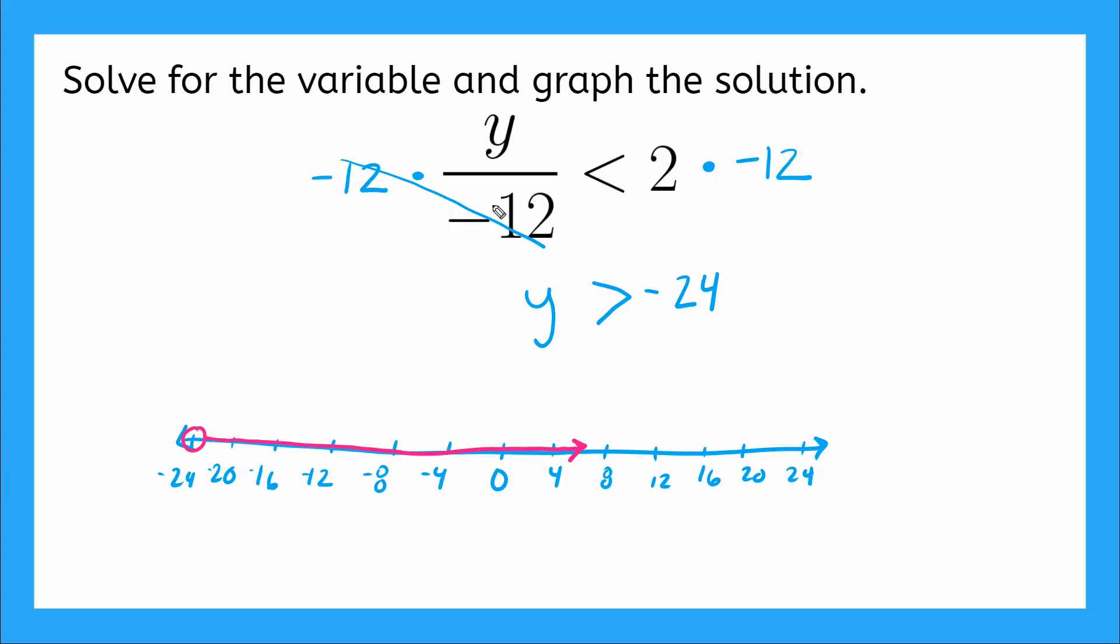So why don't we plug in a number here to see if we did it right? How about in between here? We'd have a negative 6. Let's say negative 6 is our number. So we're going to say y is equal to negative 6. What will our inequality say? We'd have negative 6 over negative 12 is less than 2.